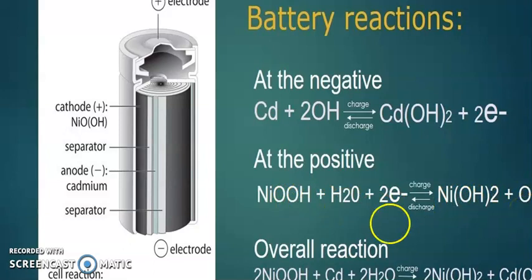The nickel oxide hydroxide gets converted into nickel hydroxide and regenerates OH⁻ ions. The overall reaction in this nickel cadmium battery: the forward reaction is charging and the backward reaction is discharging.